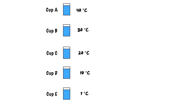So we've got cup C at 20 degrees Celsius — that's our reference point. Cup B is 30 degrees Celsius, cup A is 40 degrees Celsius, cup D is 10 degrees Celsius, and cup E is 1 degree Celsius, which would seem like the more refreshing of the five cups to drink.